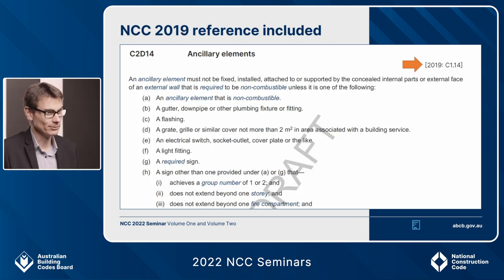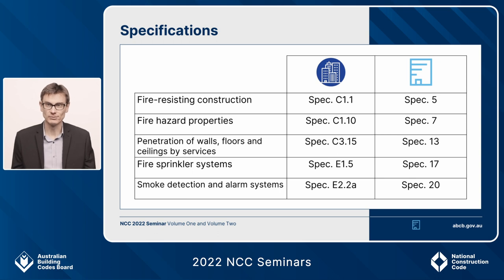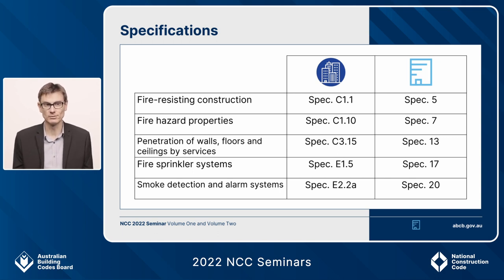If you're still lost, Control F is your friend — you can do a search in NCC 2022, because we've included the old 2019 reference next to the title in every new provision in NCC 2022. Regarding specifications in Volume 1, they are now all numbered, starting at 1 and going into the 40s. For example, Spec C1.1 is now Spec 5. We have a list of NCC specifications at the front of Volume 1, and that search function also works because we still have the old clause numbers next to the title of every clause for NCC 2022.